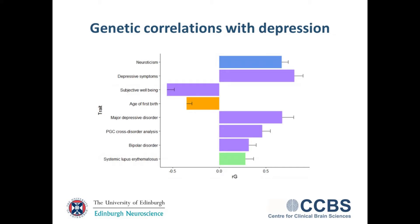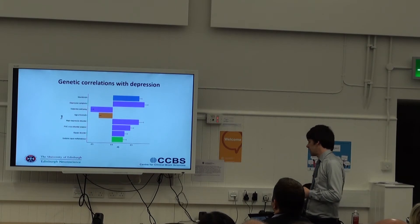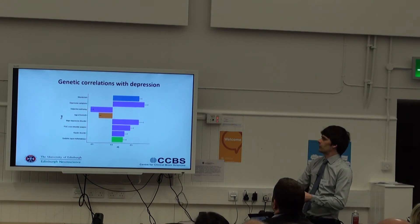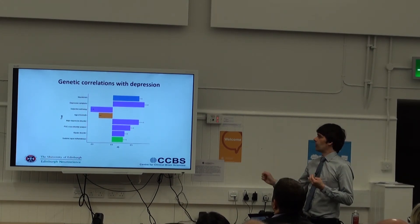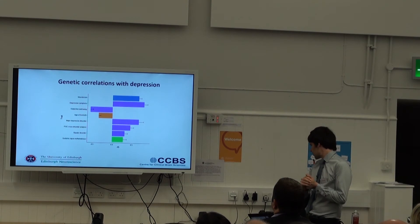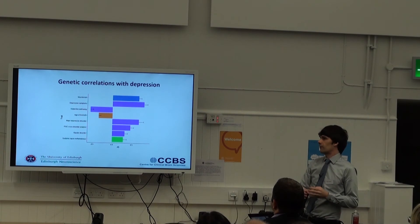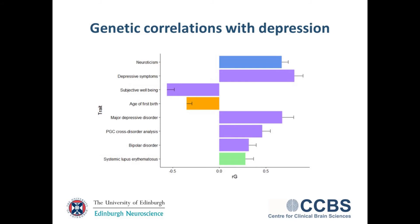Those eight significant correlations are quite believable: neuroticism, depressive symptoms, and subjective well-being — which shows a negative correlation, as expected. Also included is age of first birth, suggesting a genetic predisposition to having children at an earlier age is also linked to depression. The next three are all psychiatric traits, and the final one is the autoimmune disease lupus, which also shows a genetic correlation with depression.